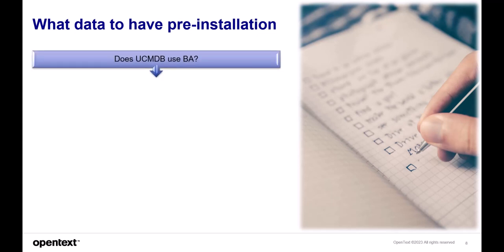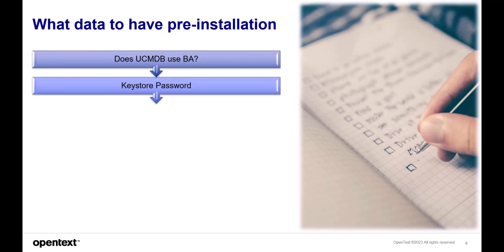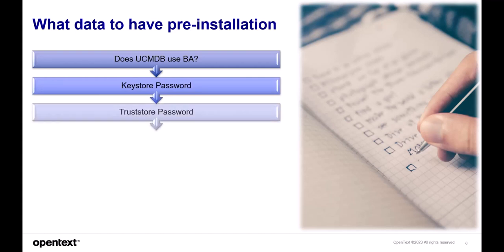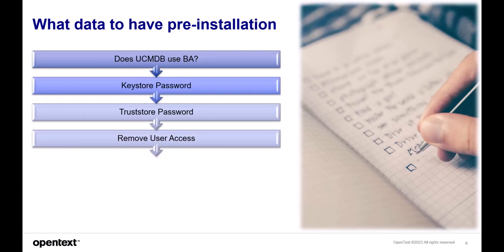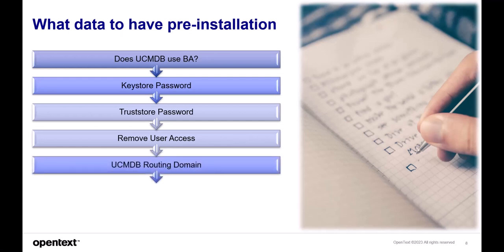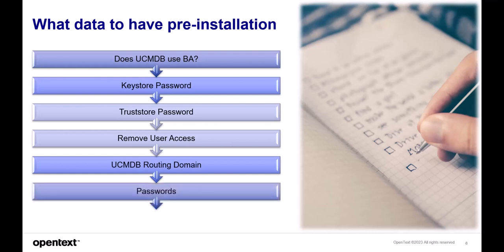Pre-installation: first, determine whether UCMDB uses basic authentication — if so, the basic authentication username and password will need to be provided to the Dataflow Probe during setup. Determine what KeyStore password and TrustStore password will be used. Consider whether to remove user access to the Dataflow Probe installation directory. The UCMDB routing domain that will be used also needs to be known before setup.